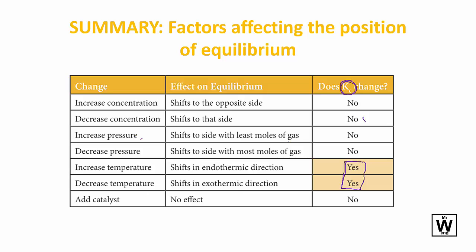We're going to go through concentration, pressure, temperature, and catalysts. For a simple reaction with liquid and gas: increasing concentration shifts the change to the opposite side, so increasing A will shift it to B. Decreasing A will shift it back to produce more A.